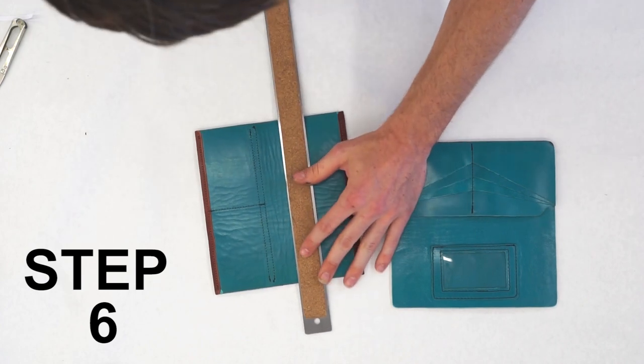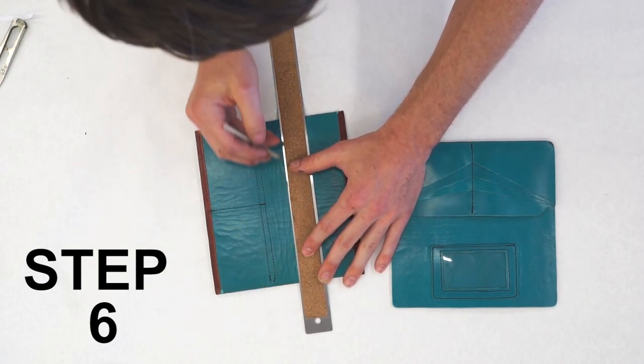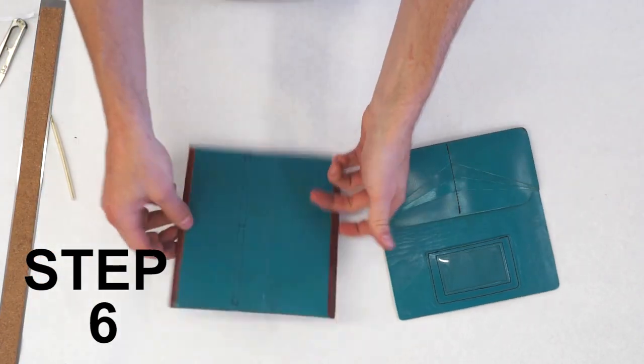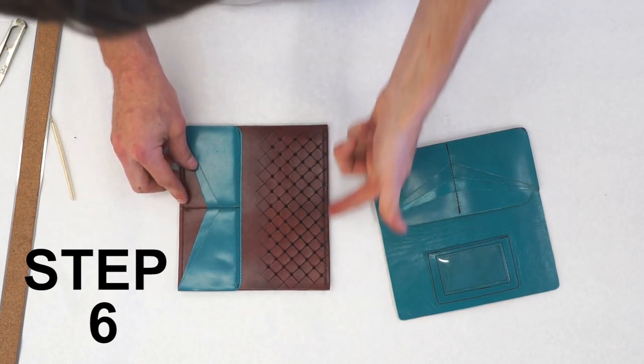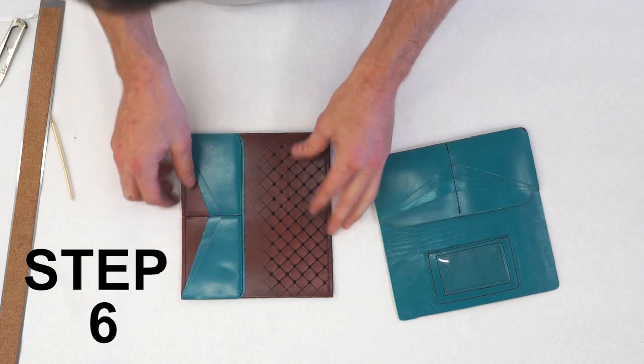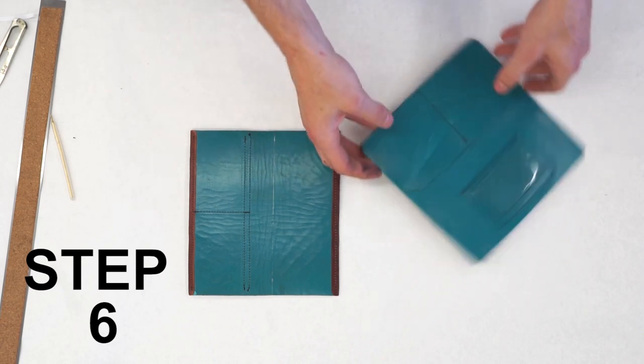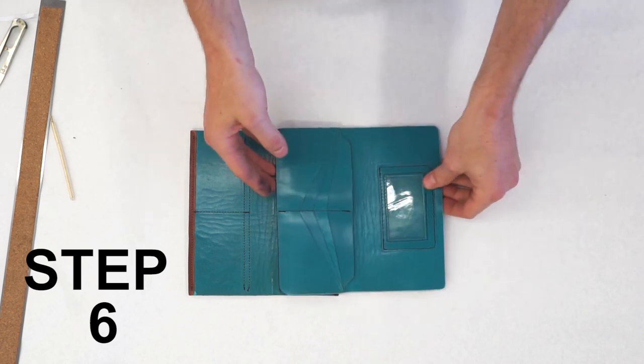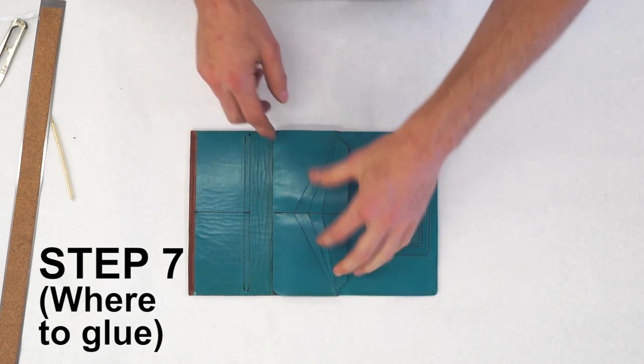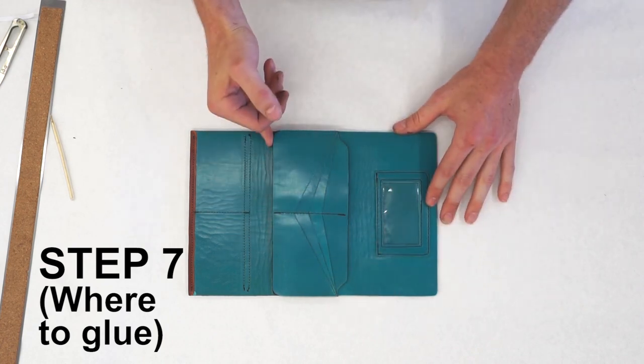We're going to measure three and an eighths. Lightly mark a line. And again, that's from this edge right here. Don't get it confused with this edge where the pockets are, because this is going to end up being your back pocket right here. And then you're going to end up attaching your other clutch back like so. Make sure the edges are flush and you're just covering that line with the bottom of this clutch back.